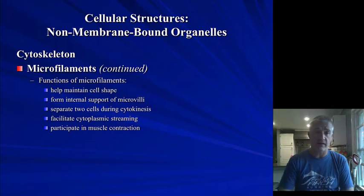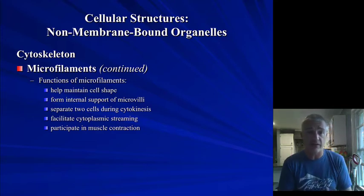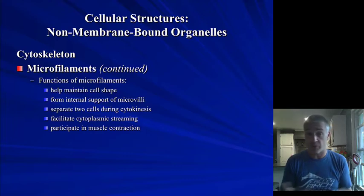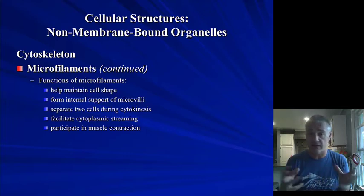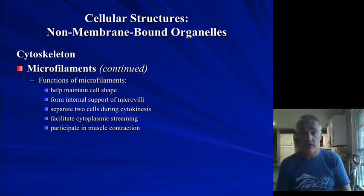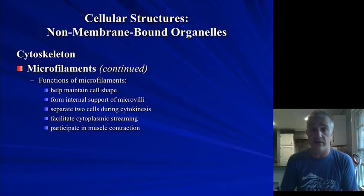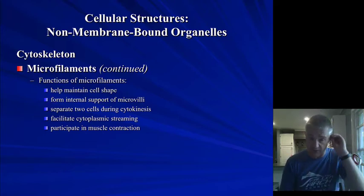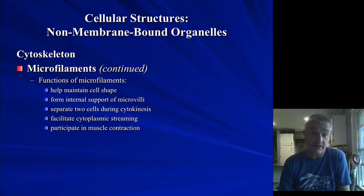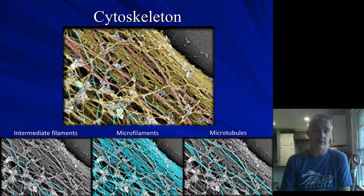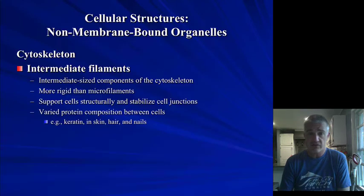We'll talk about microvilli — finger-like extensions of the plasma membrane that increase surface area for absorption. Microfilaments help form the support network for those. They're involved in moving the membrane for cell division, and they're specifically one of the filaments we'll see in muscle contraction when we get to muscle cells. You can see some of these filaments in the cytoskeleton in this electron micrograph.